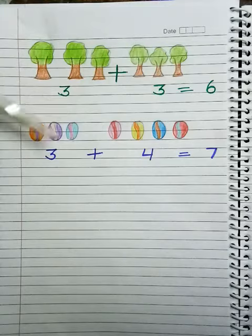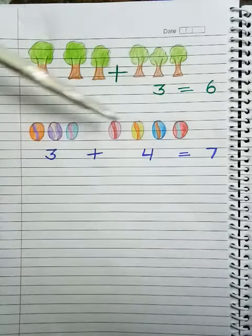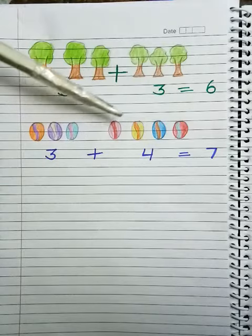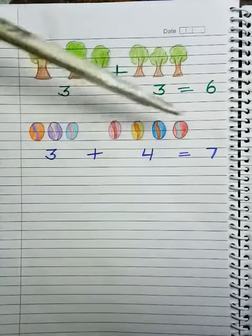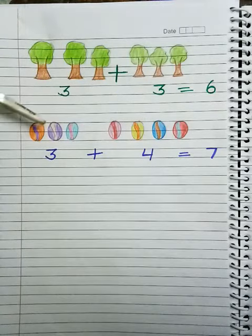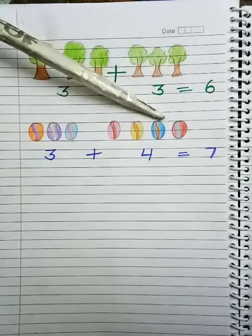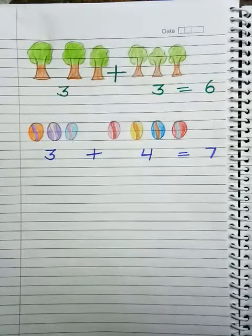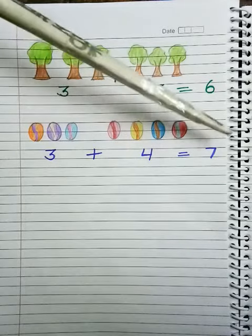And here how many balls? 1, 2, 3. And here how many balls? 1, 2, 3, 4. How many all together? Let's count. 1, 2, 3, 4, 5, 6, 7. Means 3 plus 4 equals 7.